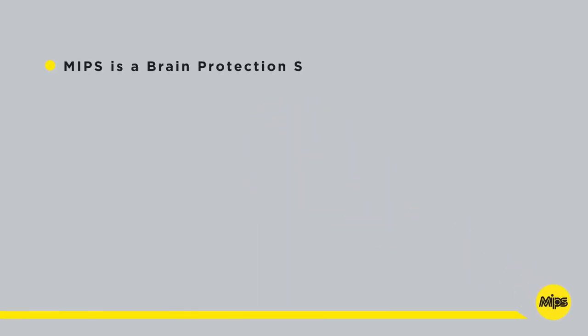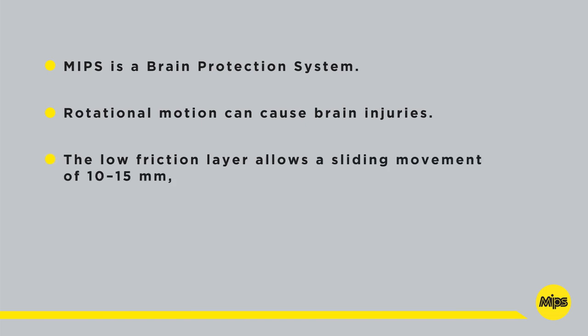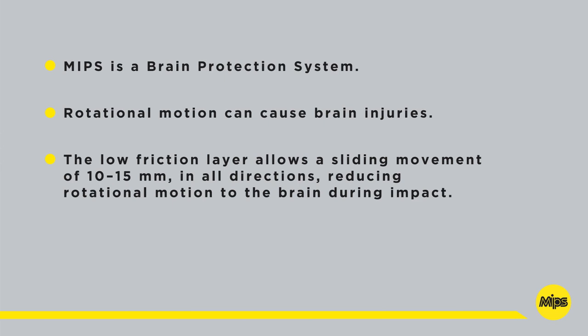MIPS is a brain protection system. Rotational motion can cause brain injuries. The low friction layer allows a sliding movement of 10 to 15 millimeters in all directions, reducing rotational motion to the brain during impact. MIPS adds protection.